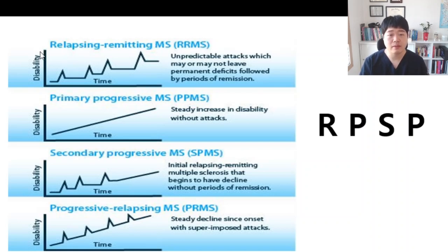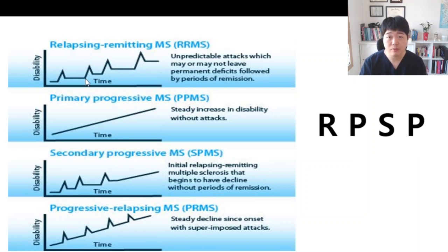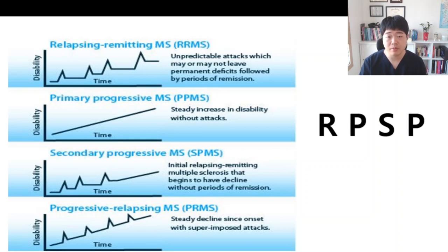The first is Relapsing and Remitting. That means attack, then some recovery period — attack, then recover. So it's called Relapsing and Remitting multiple sclerosis. That's the first initial R.